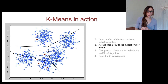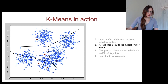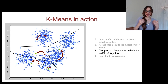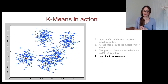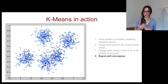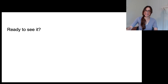We assign each point to the closest cluster center, and this produces what's called a Voronoi partition, where the space is divided up into different regions based on which cluster center each point is assigned to. Then I change each cluster center to be in the middle of its points and repeat until convergence. It doesn't always work — it depends on where you place those initial cluster centers, so sometimes people run it multiple times with different initial seeds to get a better answer.